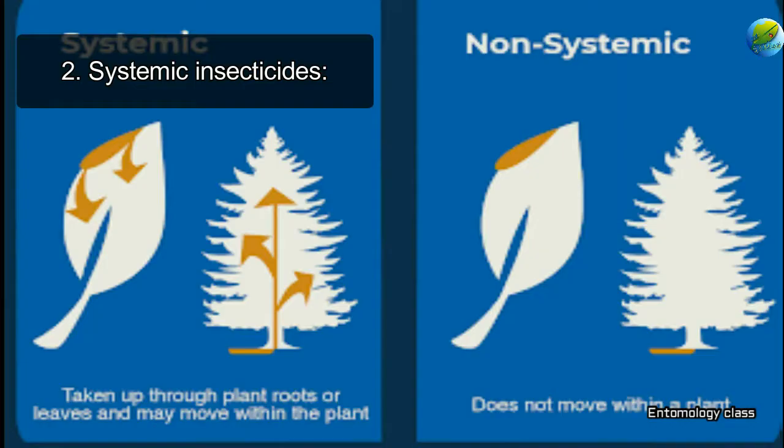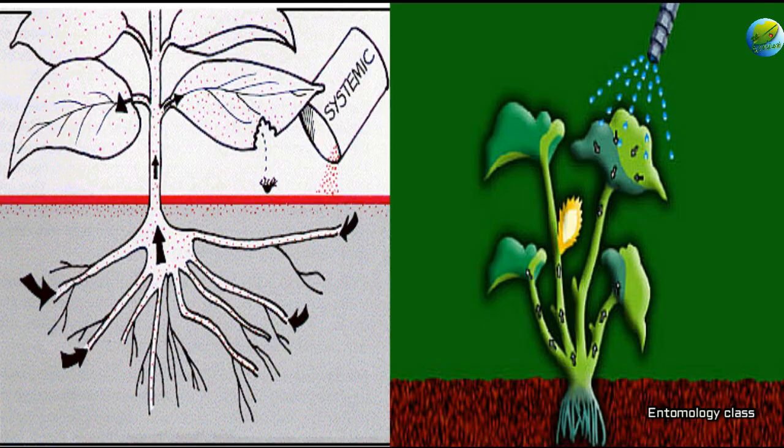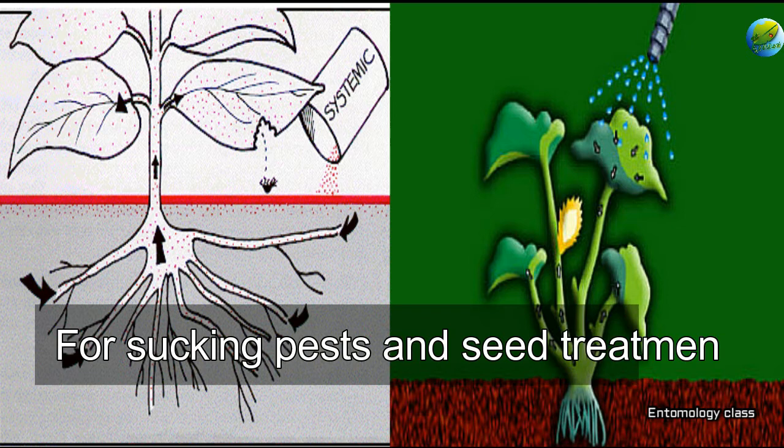The next kind is systemic insecticides. In order to get into the system of the insect, it needs to get inside the plant system first. These kinds of insecticides are mostly used for the control of sucking pests where contact insecticides are ineffective. Examples for these chemicals are imidacloprid and thiamethoxam.